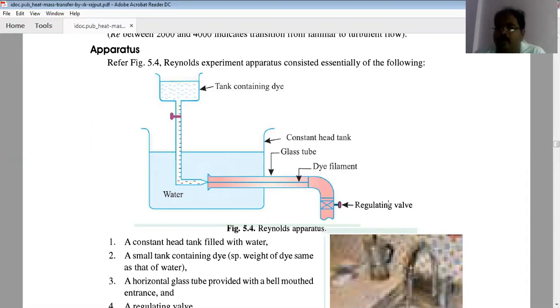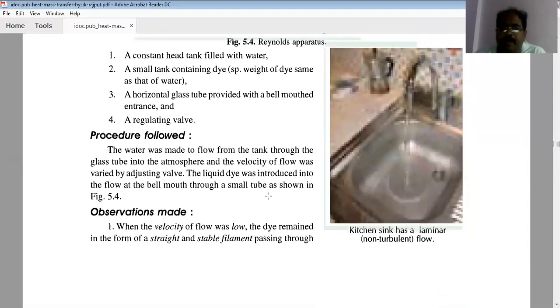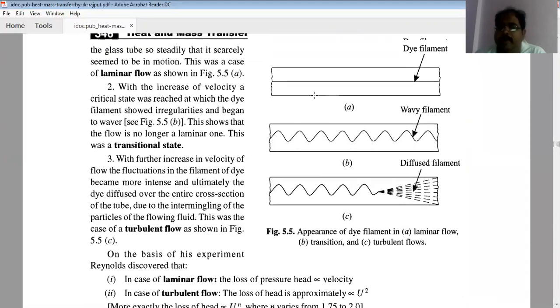When we regulate this valve to a small opening, it was observed that the movement of dye in the water follows a straight line. When we get this straight line, it is laminar flow. When the mouth of the valve is opened in a large manner, then the dye moves in a zigzag manner.